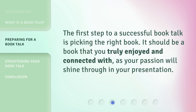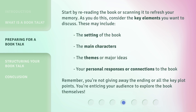The first step to a successful book talk is picking the right book. It should be a book that you truly enjoyed and connected with, as your passion will shine through in your presentation. Start by re-reading the book or scanning it to refresh your memory. As you do this, consider the key elements you want to discuss. These may include the setting of the book, the main characters, the themes or major ideas, and your personal responses or connections to the book. Remember, you're not giving away the ending or all the key plot points — you're enticing your audience to explore the book themselves.